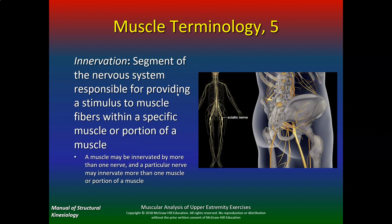Innervation: muscles always have innervation — a segment of the nervous system responsible for providing a stimulus to the muscle fibers within a specific portion. You've heard of the sciatic nerve. If you have an injury to the peripheral nerve, it can grow back. But if you have an injury to the spinal cord itself, that will not grow back. A muscle may be innervated by more than one nerve, and a particular nerve may innervate more than one muscle or portion of a muscle.